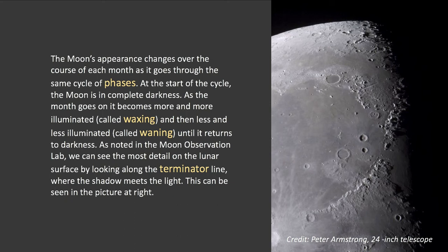Looking at a photograph of the moon, you can see that part of it is in shadow and part of it is in light. The moon is not shining this light — it's reflecting it, reflecting sunlight. So half of the moon is always illuminated. But we don't always see half of the moon illuminated, because our angle on it, our perspective, is changing. What it looks like to us, its phase, depends on our angle of view.